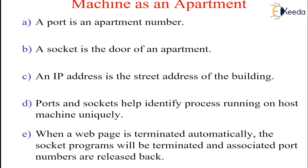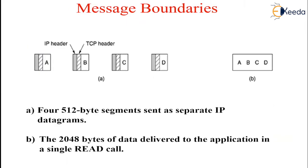All TCP connections are full duplex and point-to-point. Full duplex means traffic can go in both directions at the same time. Point-to-point means each connection has exactly two endpoints; TCP does not support multicast or broadcast. A TCP connection is a byte stream, not a message stream — message boundaries are not preserved end-to-end. For example, if the sending process does 4 writes of 512 bytes to a TCP stream, this data may be delivered to the receiving process as 4 512-byte chunks, or 2 1024-byte chunks, or 1 2048-byte chunk, or some other way, as shown in the figure.